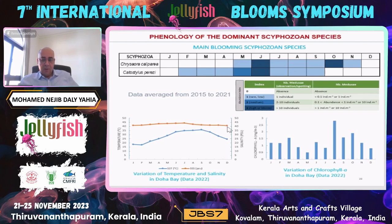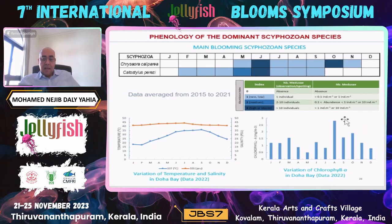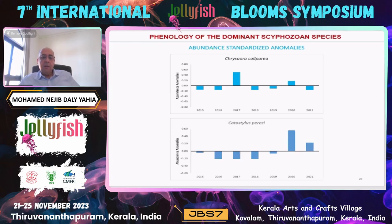Here is some data showing the extreme conditions where our jellyfish are blooming. In summer, salinity can reach 45 PSU on the east coast and even 70 PSU on the west coast of Qatar, with temperature reaching 34–35 degrees Celsius and high chlorophyll-a concentrations. When we analyze the standardized anomalies, we see positive anomalies of Chrysaora caliparea in 2017 and 2020, while Catostylus anomalies are more positive since 2020.